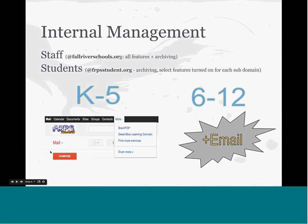We have two domains: fallriverschools.org for staff, and frpsstudent.org for students, to archive our staff email and keep them separate. We wanted to segregate two groups of our student population — K-5 students — because our parents and school board didn't feel they should have the ability to email at such a young age. So we turned off certain features for K-5 students: mail is turned off, but calendar, docs, sites, groups, and contacts are available, as well as some third-party plug-ins. We have BrainPOP, DreamBox, and a few others that, once students authenticate into their Google Apps account, they can automatically authenticate into those third-party vendors that we use.